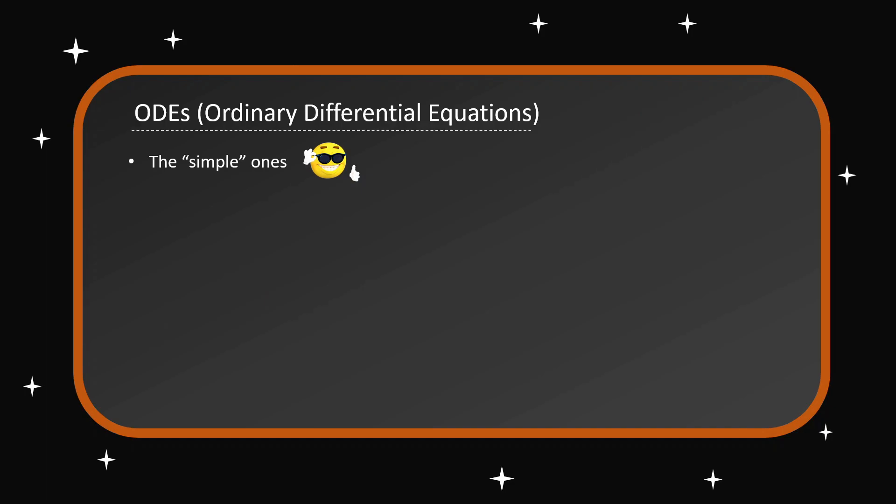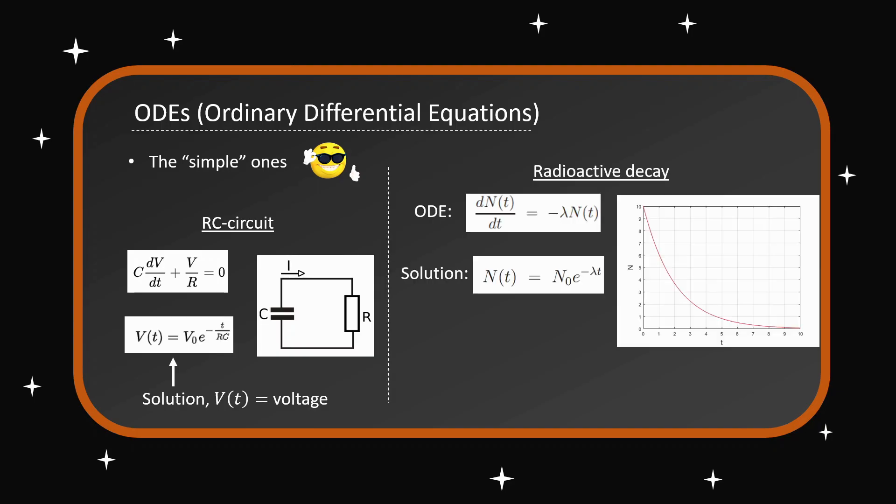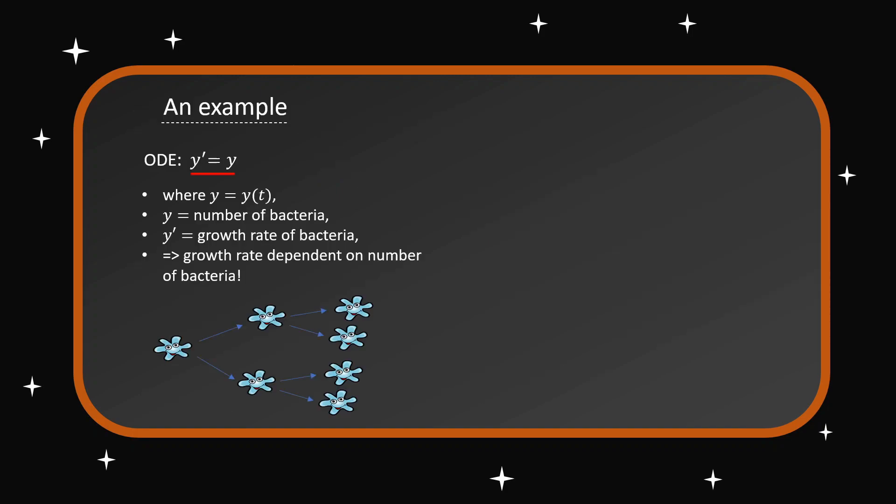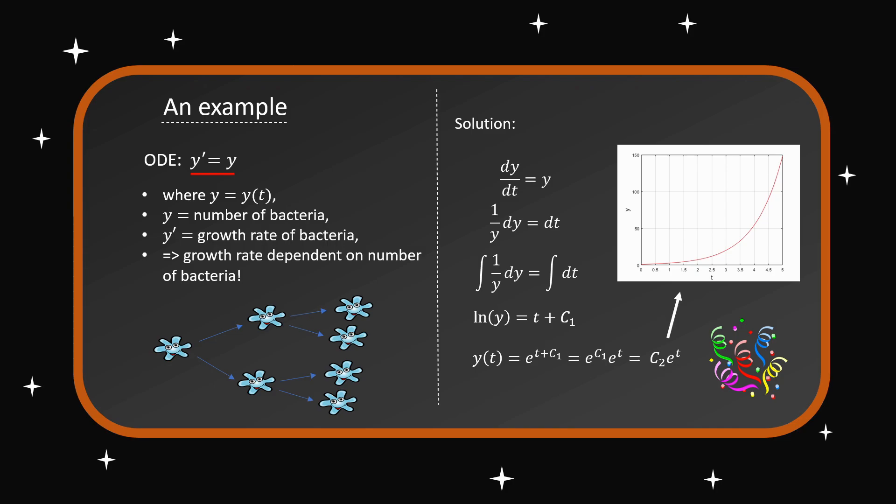ODEs describe many things in the world we see, from circuits to radioactive decay, on only one variable they slay. For example we have y prime equals one, this could be bacteria growing, they multiply. We rearrange then integrate, we get rid of the log and celebrate.